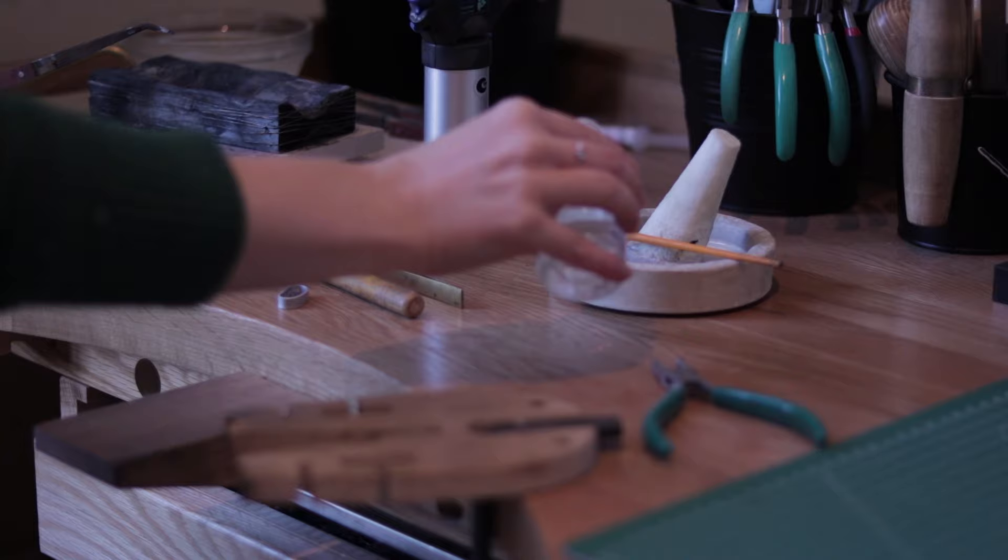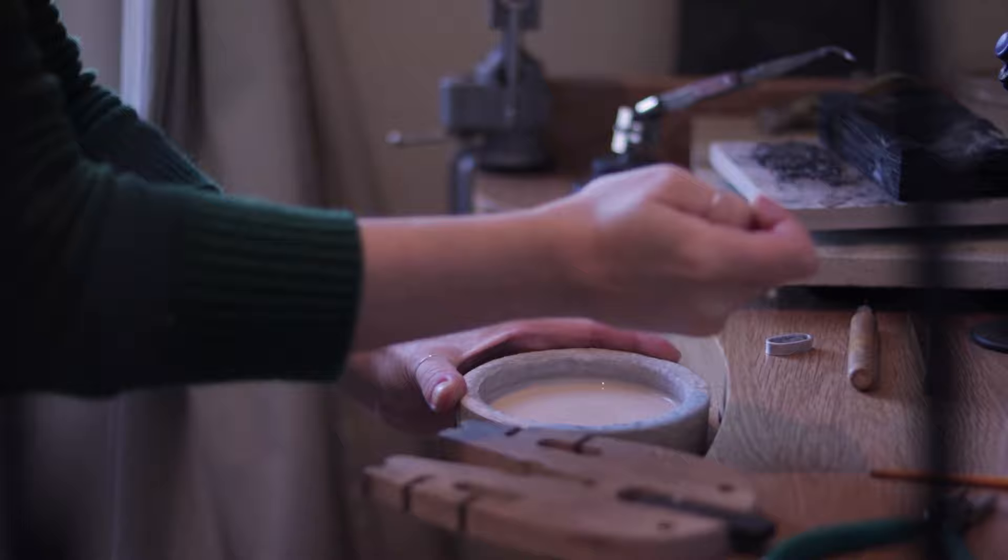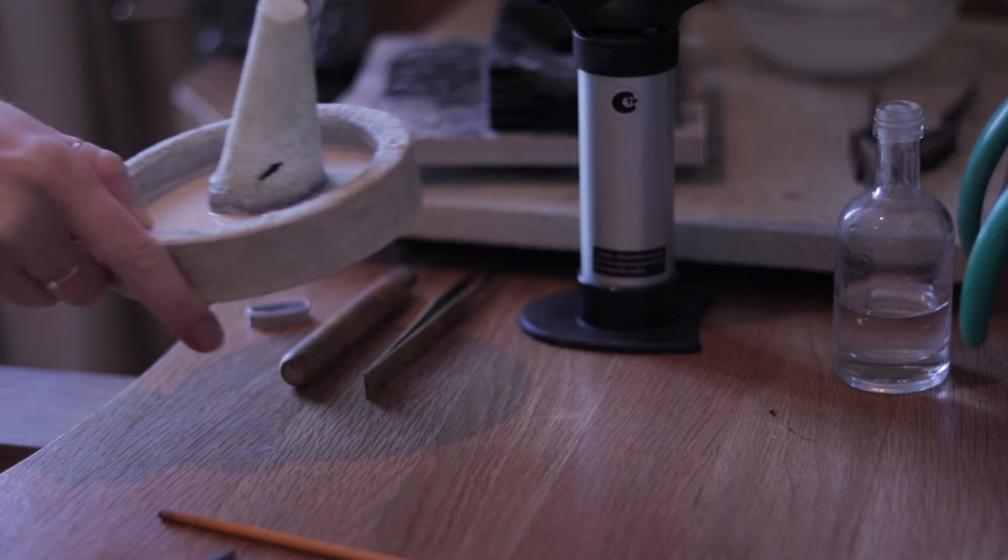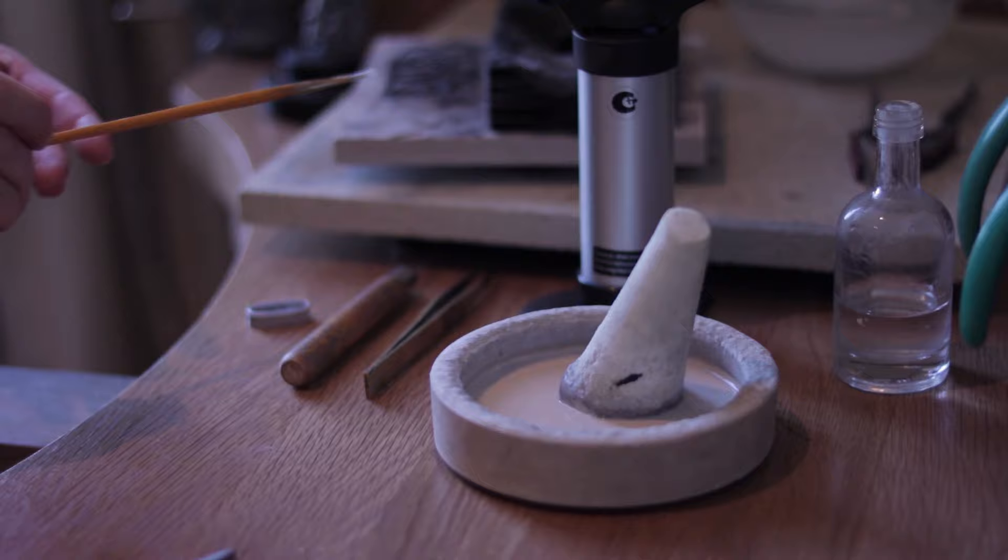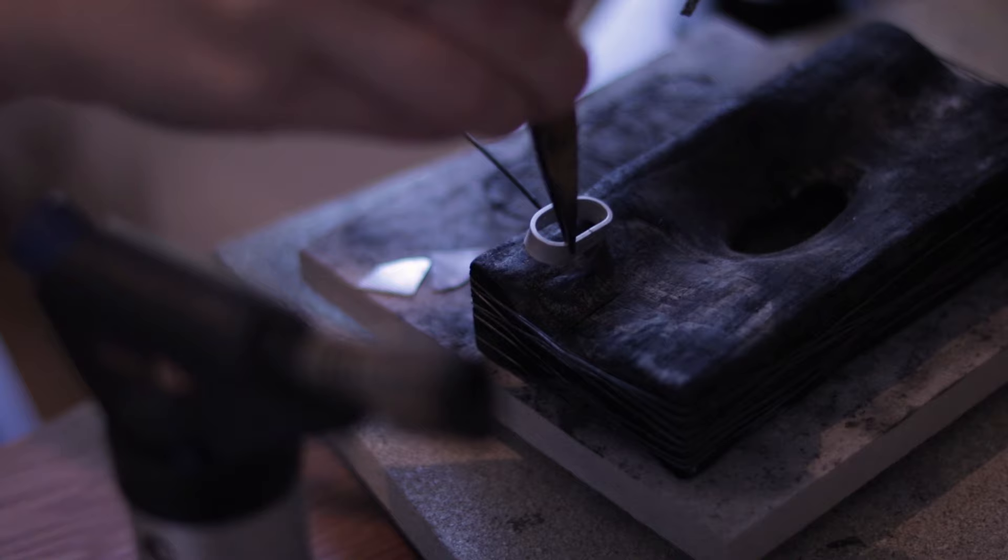I am now going to prepare flux. Flux is a solution kind of like a paste that you will need to apply to the place on the metal where you'll be soldering. This is required for the solder to flow. Here I am using borax cone and a little dish with a dash of water and then I'm going to create a paste using this dish. I will apply this flux onto the metal using a little brush. I am going to cover the ring with the flux.